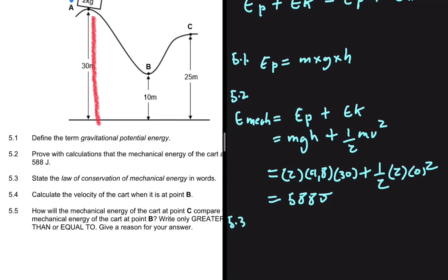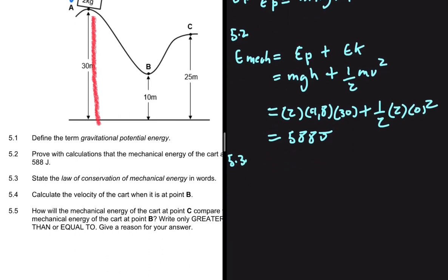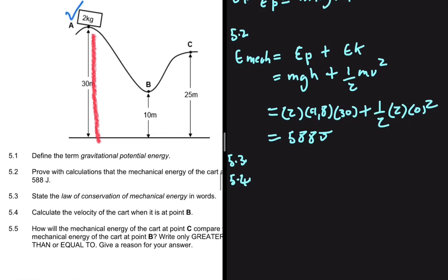5.3 asks us to state the law of conservation of mechanical energy in words — we've already covered that. So let's go ahead and do 5.4: Calculate the velocity of the cart when it is at point B. We want the velocity at point B. We're going to use the law of conservation of mechanical energy, so the mechanical energy at point A should equal the mechanical energy at point B because it is conserved.